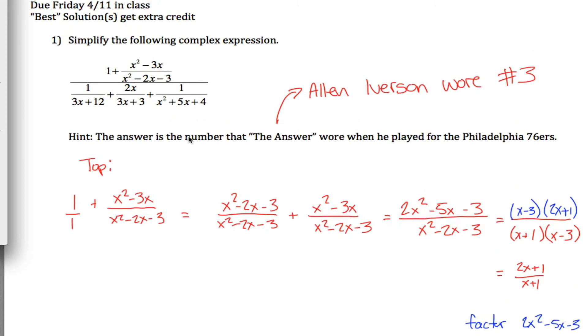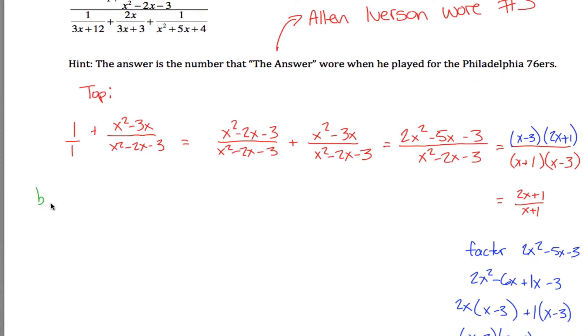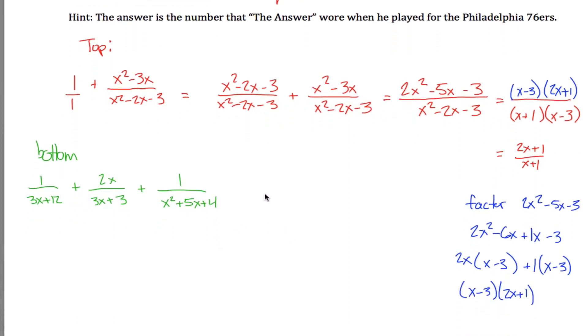Now we've got to simplify the bottom here. So on the bottom, I got three terms, 1 over 3x plus 12 plus 2x over 3x plus 3 plus 1 over x squared plus 5x plus 4. Damn, adding together three terms, that's not going to be very fun. What I would need would be a common denominator. It's very hard to look at these and tell what the least common denominator is, but maybe if I factor the bottom for all three, I'll be able to tell.